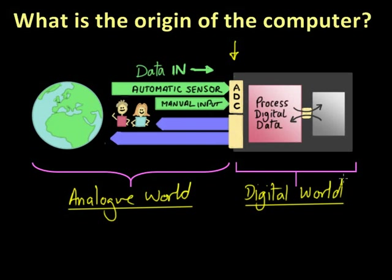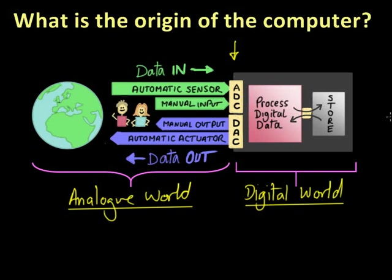Now hopefully the digital computer will process that digital data in some way to produce some meaningful output that we can use. During that process, the digital computer may need to store values temporarily or permanently in some sort of storage area. Once the processing has been done and some suitable output has been generated, then that data can pass through another converter at the interface, which does the opposite job called a digital to analog converter, and produces meaningful output in the form of images, sound, movement maybe, through a manual output device or through some sort of automatic actuator back into the analog world.